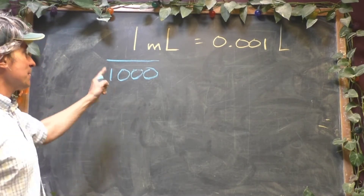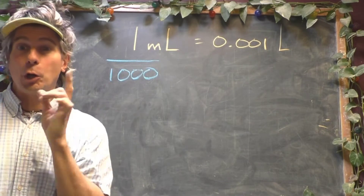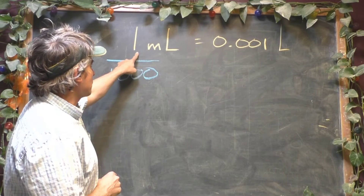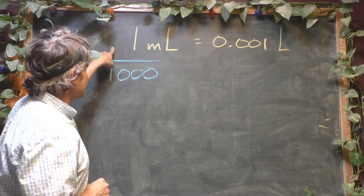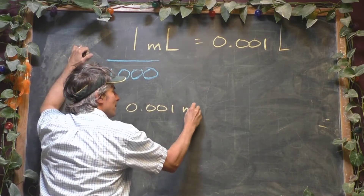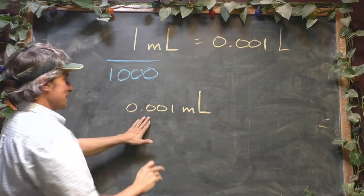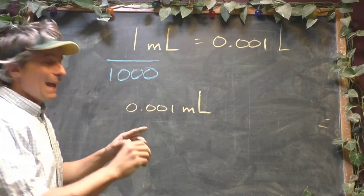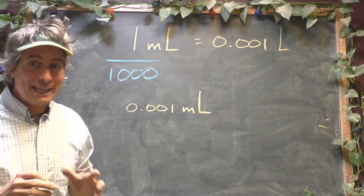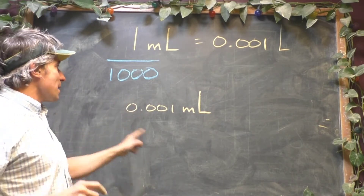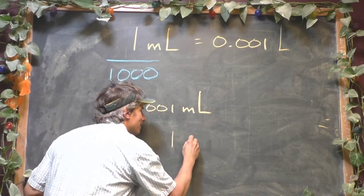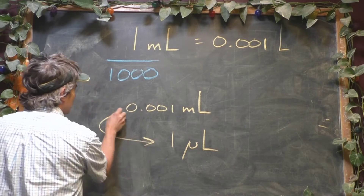If you divide a milliliter into a thousand pieces, we can do this a couple of different ways. Let's do it with the old moving-the-decimal-place method. Here's a decimal — we're dividing it by a thousand. Move it over once, twice picking up a zero, thrice picking up a zero. It's going to be 0.001 milliliters. That's exactly what happened here. But in your field of study — microbiology — that has another name. Besides one thousandth of a milliliter, it's called one microliter.